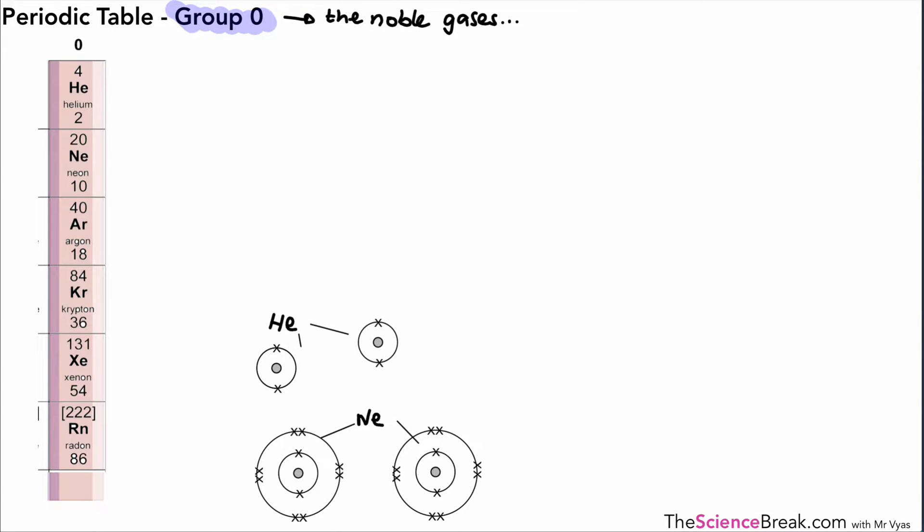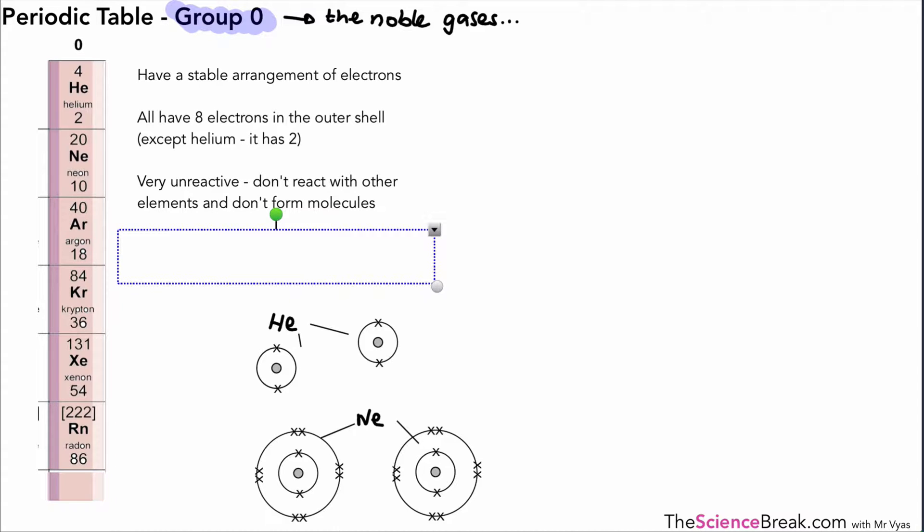Let's make a note of a few points about Group 0. Firstly, they have a stable arrangement of electrons. They all have eight electrons in the outer shell except helium, which has two, but that's still a full outer shell. They are very unreactive - they don't react with other elements and they don't form molecules very easily at all. And the lower down the group you go, the higher the boiling point.